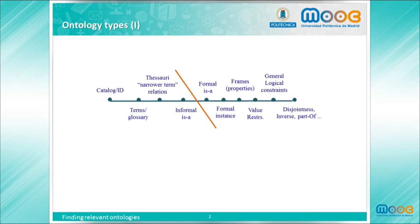First of all, let's have a look at the different types of knowledge resources according to the level of expressivity. This slide shows structured resources from less expressive — for example, catalogues or glossaries at the left — to more expressive at the right. Traditionally we start talking about ontologies when the resources include formal IS-A relationships. Then some other elements can be added, like properties, value restrictions or logical constraints.